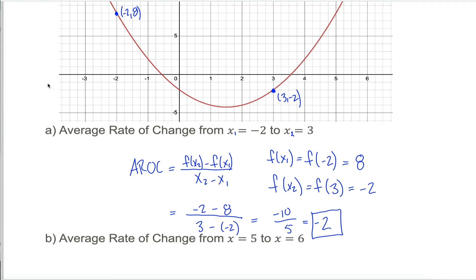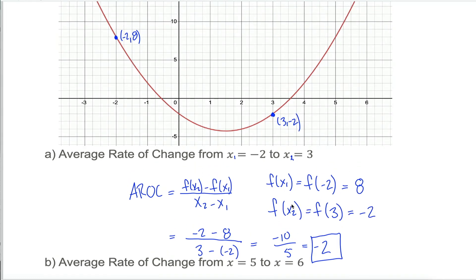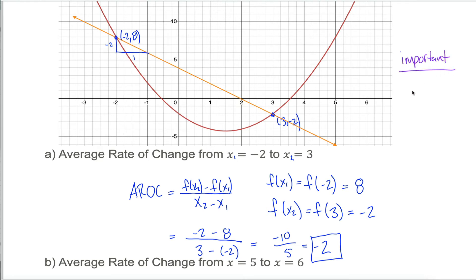Before moving on, I want to make one more point. What we did is take the difference in y-coordinates divided by the difference in x-coordinates. If that rings a bell, that's exactly what we talked about with linear equations — it's the slope. The difference in y divided by difference in x, sometimes called rise over run, is just the slope of a straight line. So really, when we calculate the average rate of change, all we're doing is calculating the slope of the line connecting two points on a graph. That line is called the secant line.